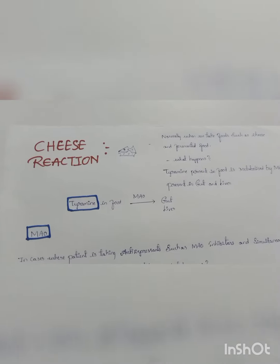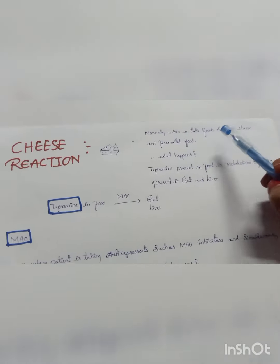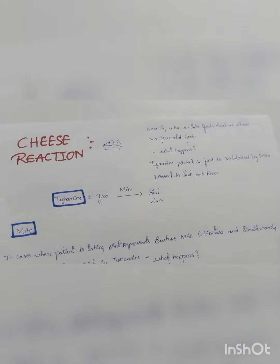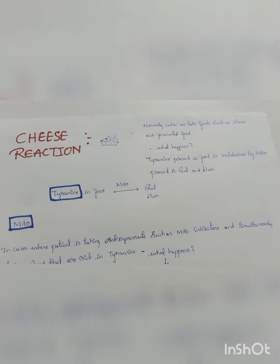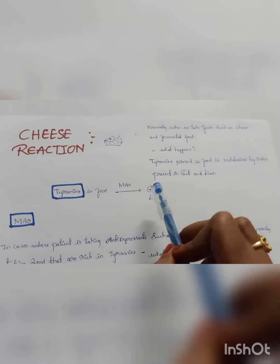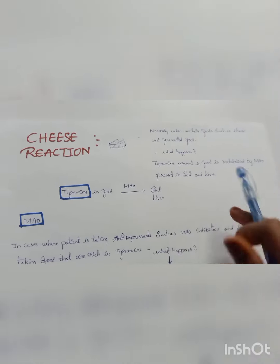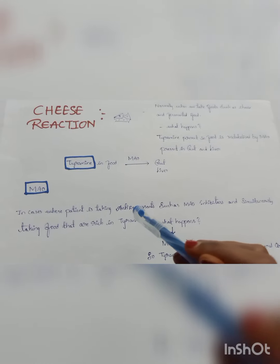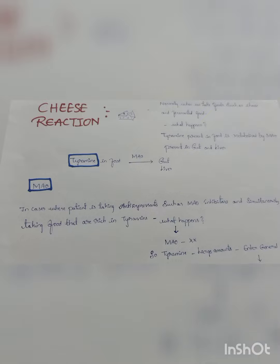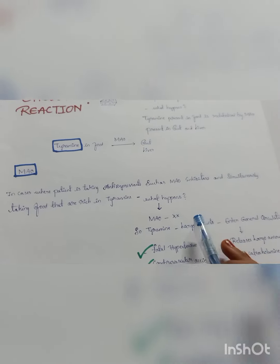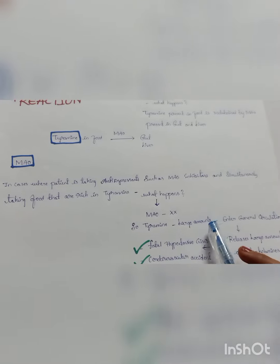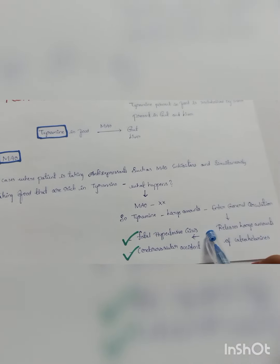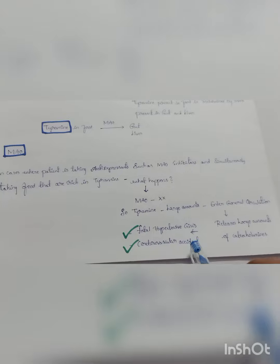An important point to remember is the cheese reaction. Normally when we take foods such as cheese and fermented food, tyramine present in the food is metabolized by MAO in the gut and liver. In cases where a patient is taking MAO inhibitors and simultaneously eating tyramine-rich foods, the MAO enzyme is blocked. Tyramine enters the general circulation in large amounts and releases large amounts of catecholamines, causing a fatal hypertensive crisis and cerebrovascular accident.